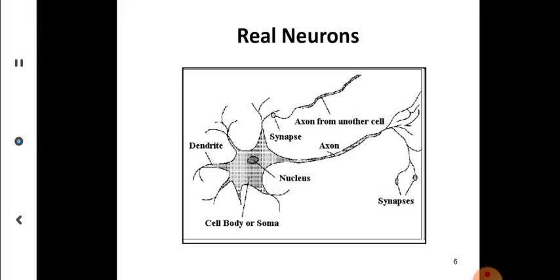This is a real neuron. You can see there is an axon, which is the interconnection from one neuron to another. There are synapses, which are connector places. There are dendrites and cell bodies or soma.